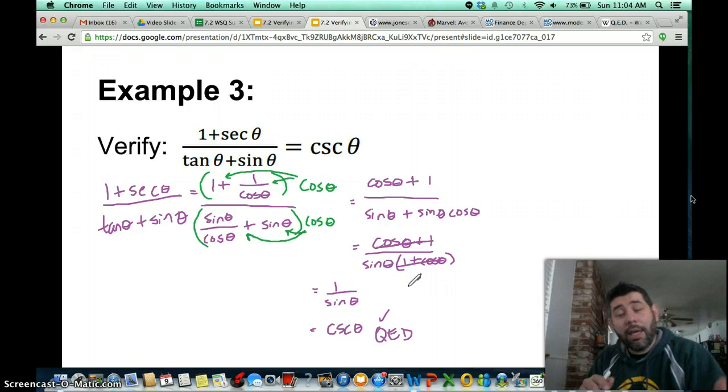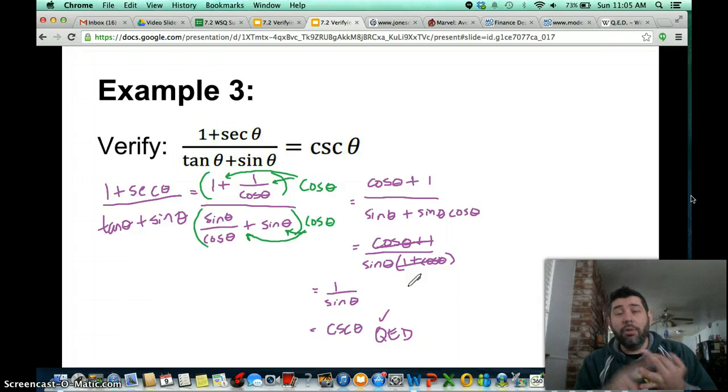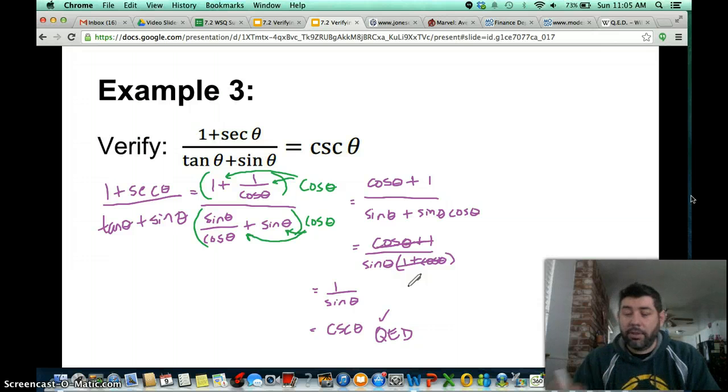So that's verifying, guys. Again, you want to make sure that you kind of see where you're going, what you think you're going to end up with. Use the same strategies that we covered with simplifying. And start from the more complicated side. Simplify it until you get to the least complicated side. Those are the tricks, the strategies you want to use for verifying trigonometric identities.